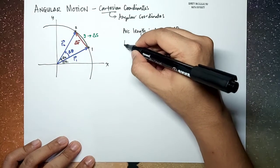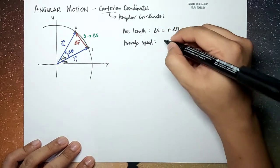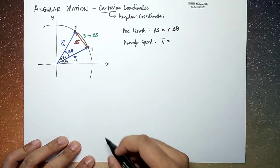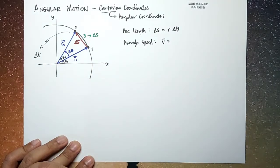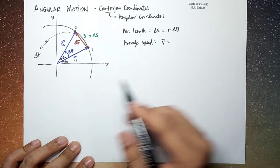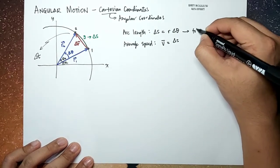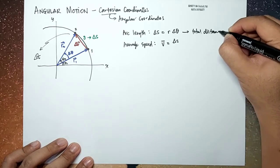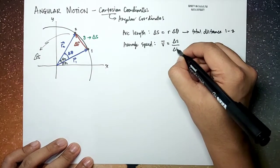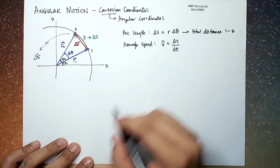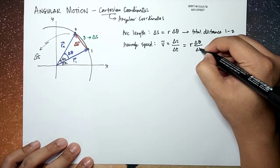From here we can take the average speed — that's the total distance traveled per unit time. If this motion is taken over a period of delta t, then the average speed is delta s divided by delta t. In terms of angular displacement, this is equal to r times delta theta divided by delta t.